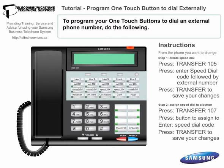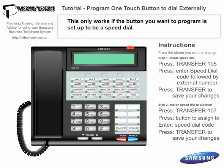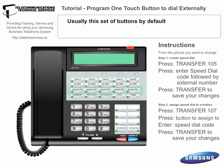To program your one-touch buttons to dial an external number, do the following. Before that, though, this will only work if the button you want to program is set up to be a speed dial — usually this set of buttons by default. If yours are not set up this way, please call to arrange for us to provide you with a map of your phone button programming.